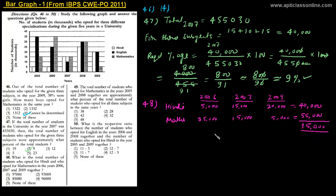So the total number of students in Hindi and Mathematics combined is 40,000 plus 55,000, which equals 95,000. Checking the options — 97,000, 93,000, 85,000, 96,000, and none of these — the correct answer is 'none of these', since 95,000 does not match any listed option. So for question 48, 'none of these' is correct.